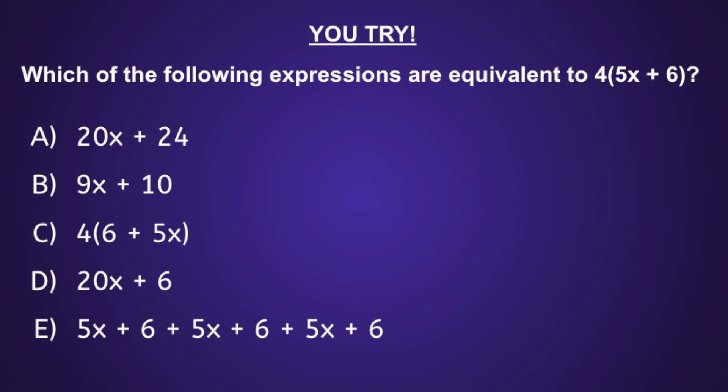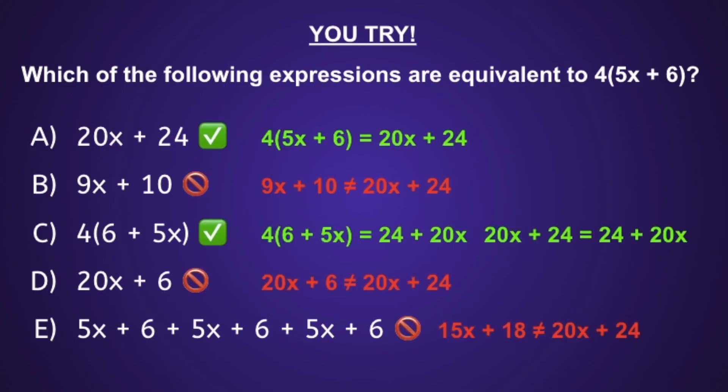Alright, let's check it out. The solutions equivalent to the expression 4 times the quantity 5x plus 6 are A, 20x plus 24, and C, 4 times the quantity 6 plus 5x. If you had any of these incorrect, I would recommend you pause the video, review your work, and see if you can find your mistake. Thank you for watching!